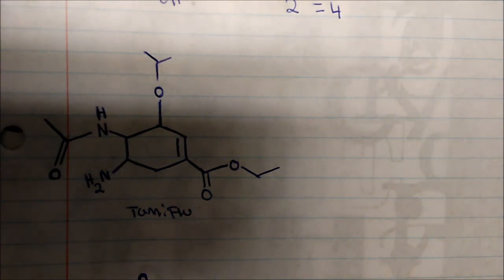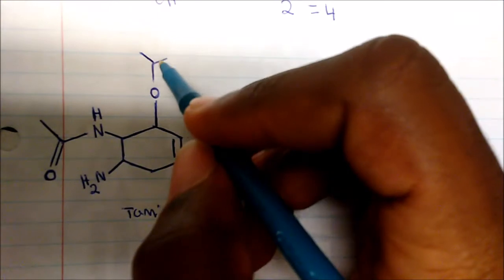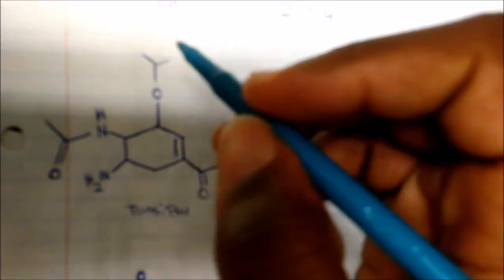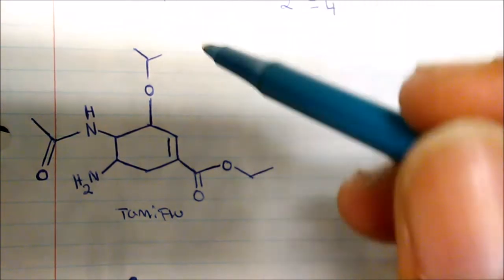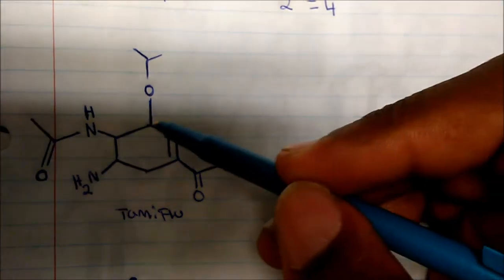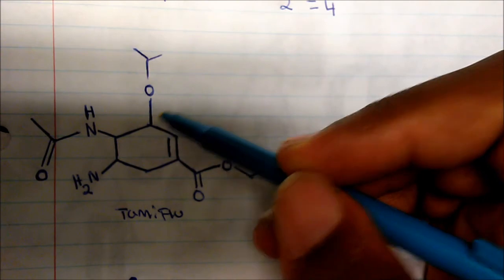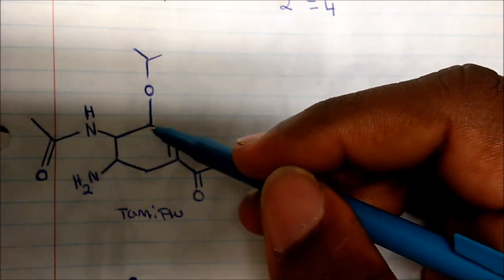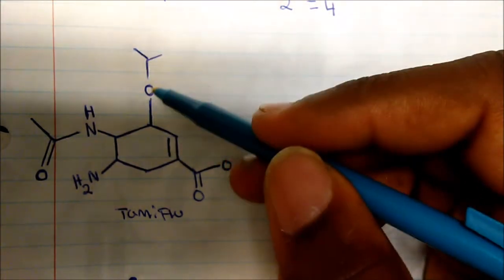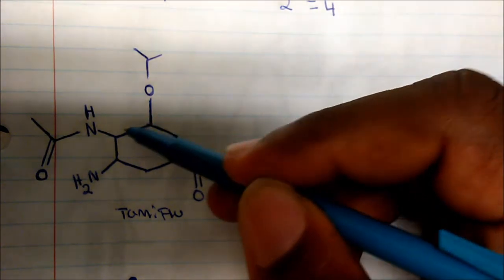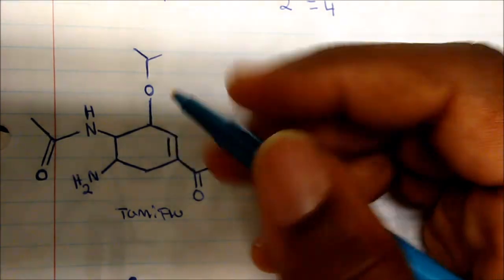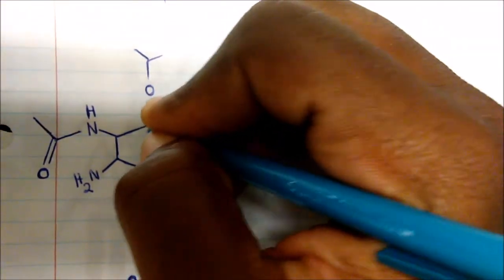Looking at this carbon, it has two methyl groups bonded to it — not chiral. What about this carbon? It has a large group going away, another different side group, another different side group, and a hydrogen coming out — so this is a chiral center.